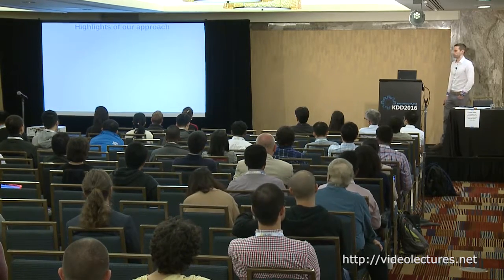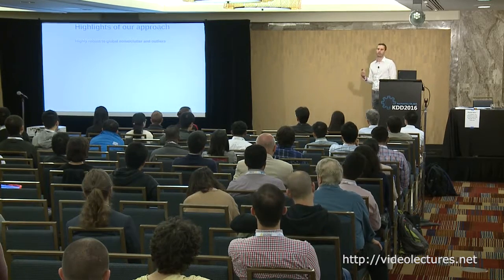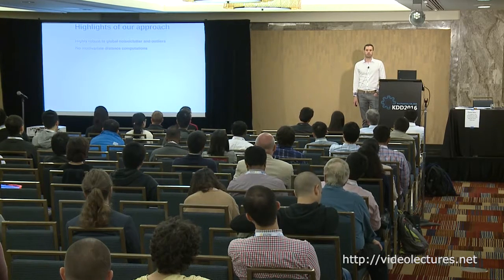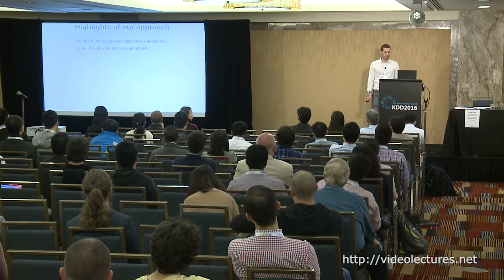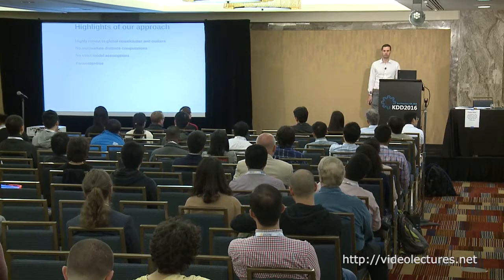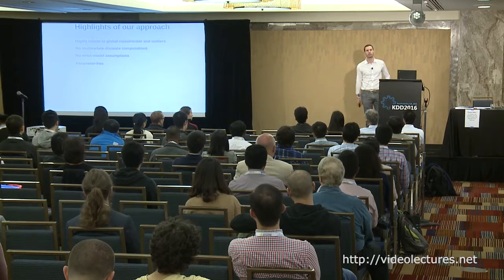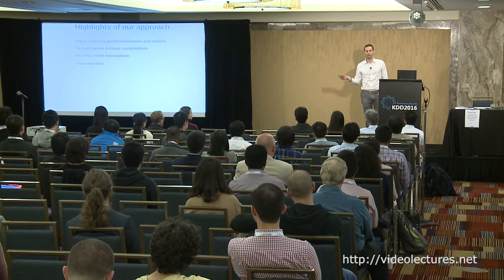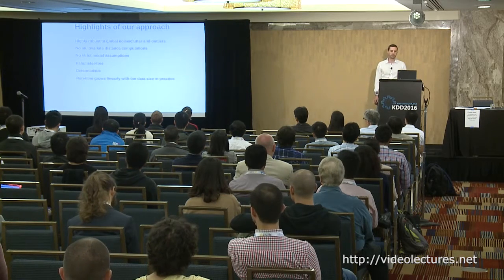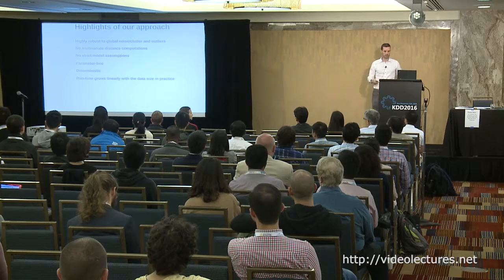The highlights of this approach: highly robust to global noise, clutter, and outliers — we inherit this robustness from the dip. No multivariate distance computations. No strict model assumptions. Parameter-free — the only thing that could be considered a parameter is the statistical significance threshold alpha, which we always set to 0.05. Deterministic. Runtime grows linearly with data size in practice, which is important for scalability.